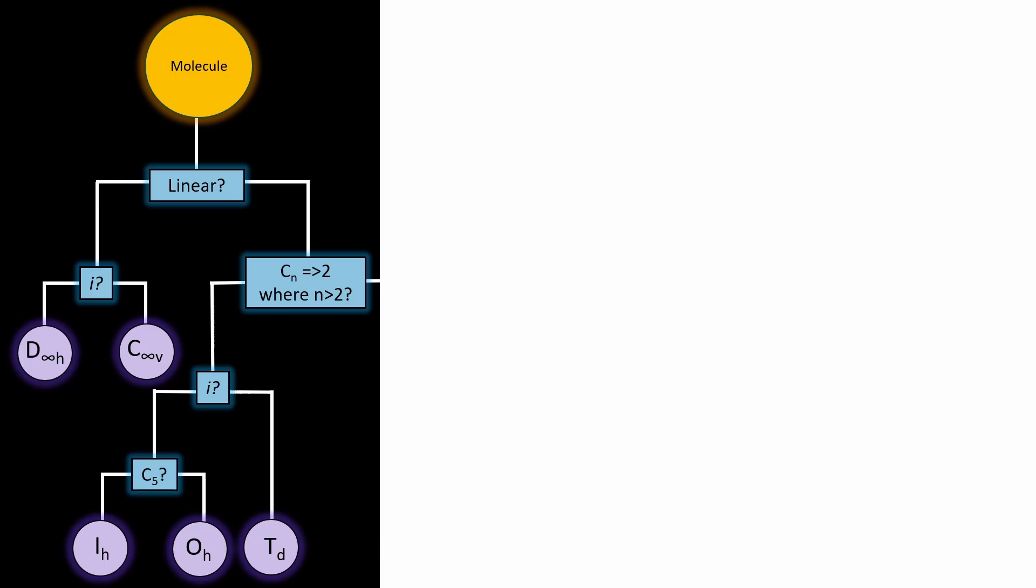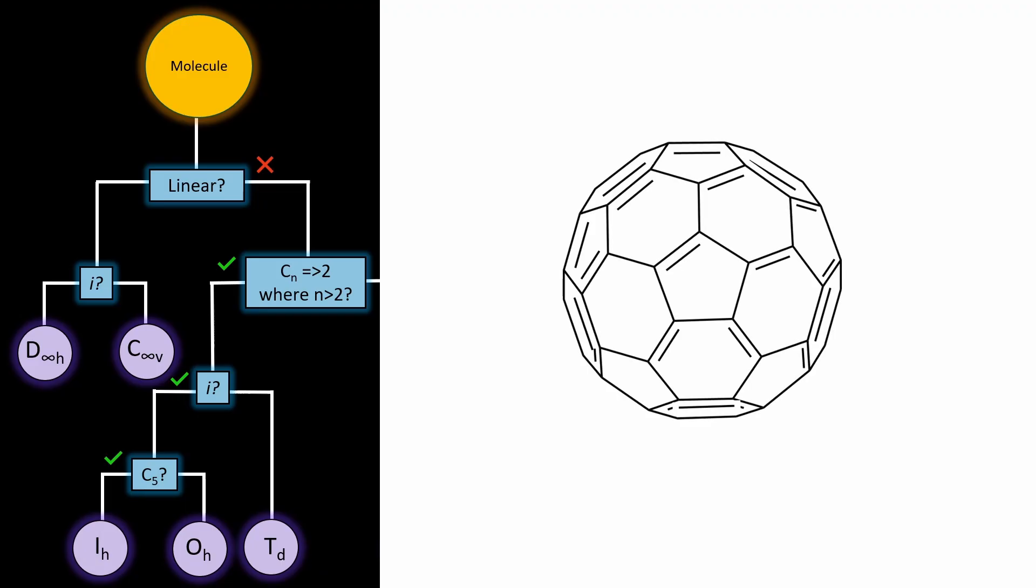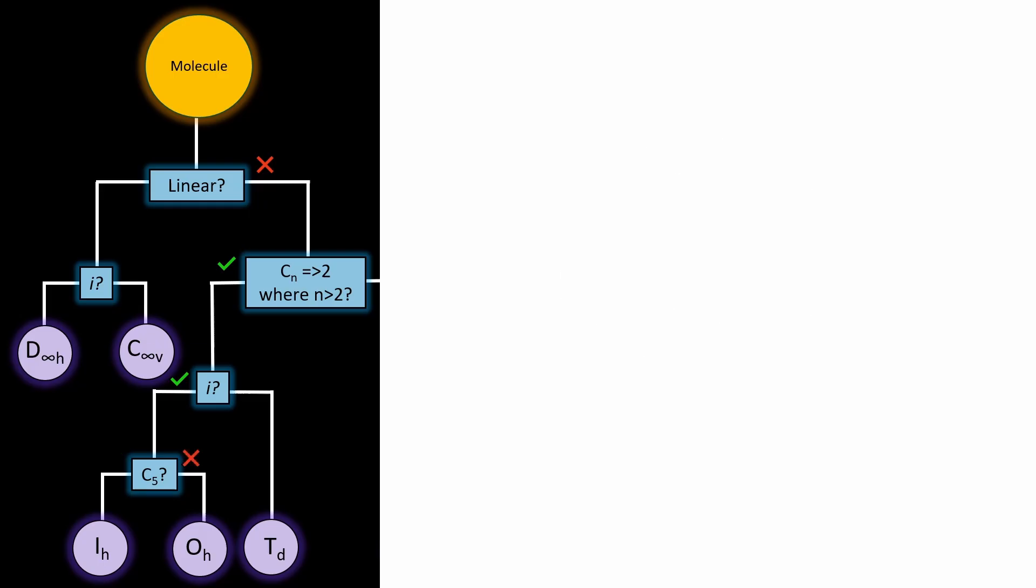Now going back, if it's not linear, does it have multiple rotation axes higher than C2? If yes, and there's a center of inversion, does it have a C3 axis? If yes, it's IH, for example fullerene. If no C3 axis, it's OH, for example sulfur hexafluoride.